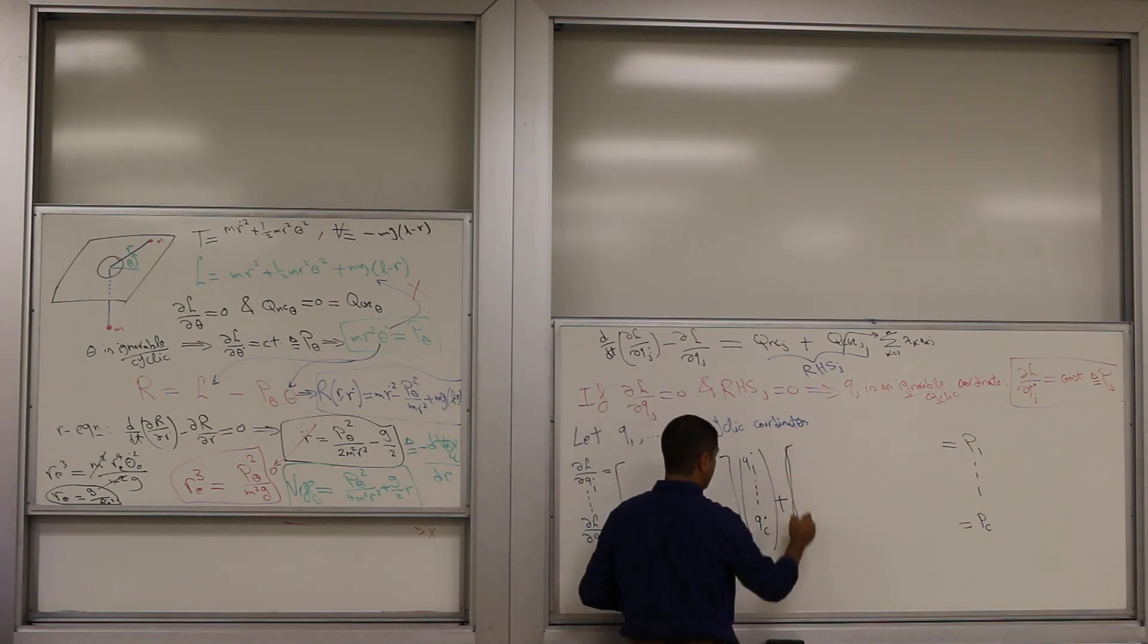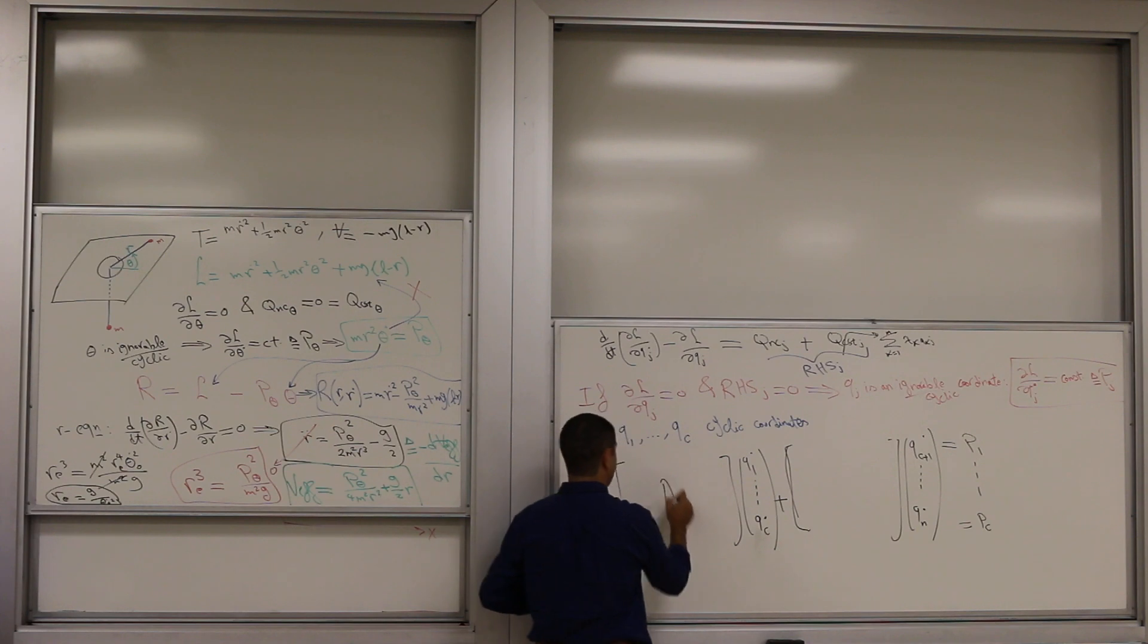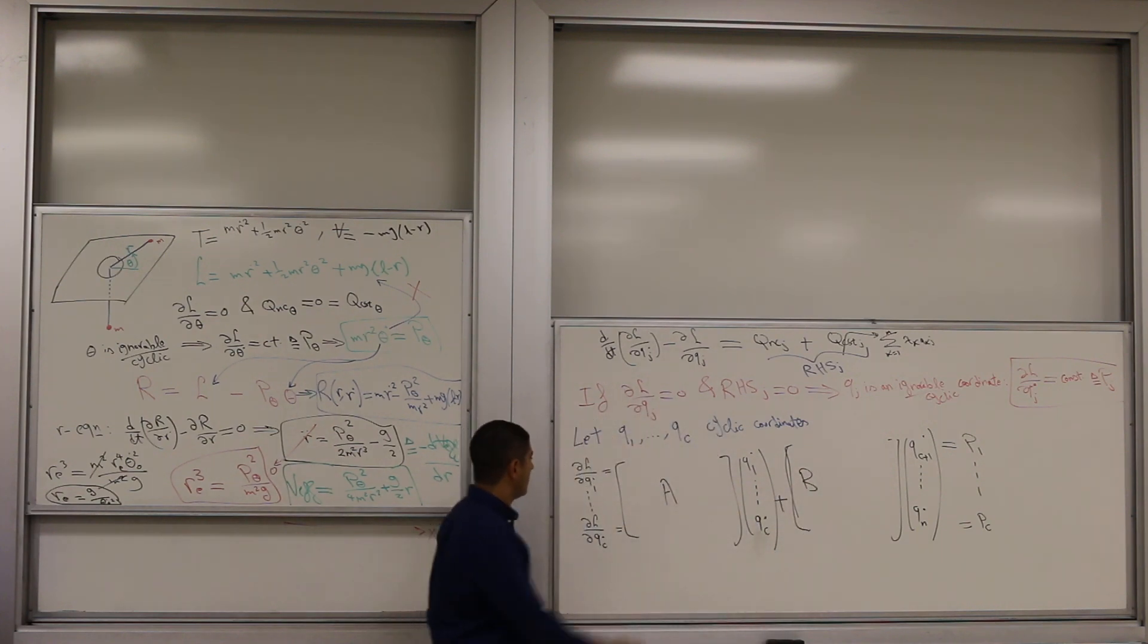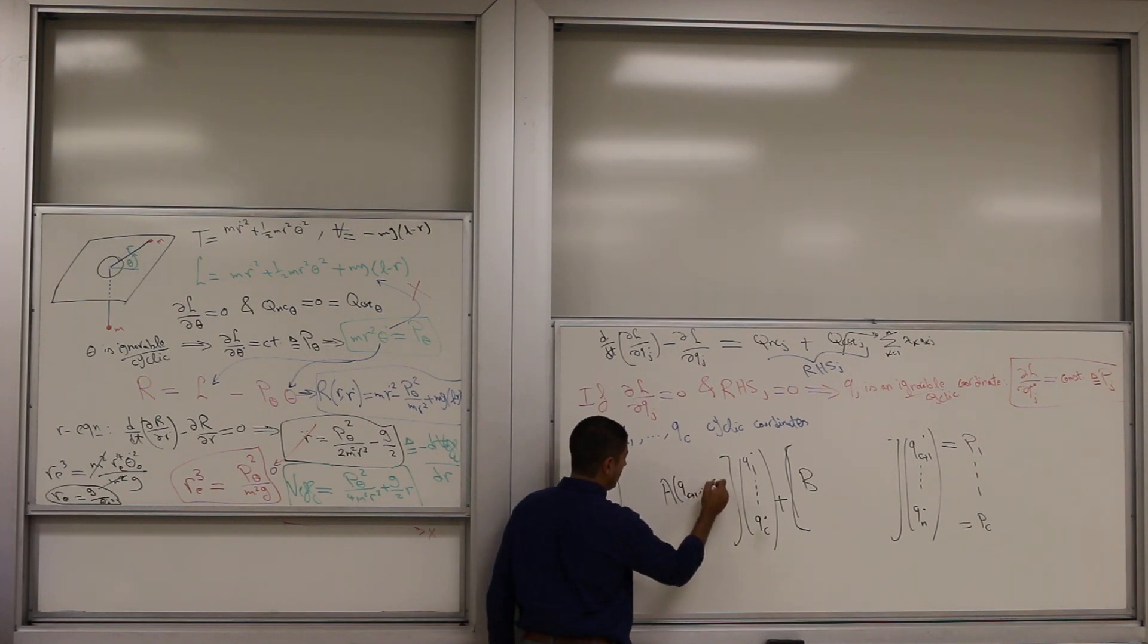And another linear combination of the remaining things. I will call this A, call this B, A and B matrices. They may be a function of q's, right? But there is no q1 up to qc, so this is qc plus 1 up to qn.